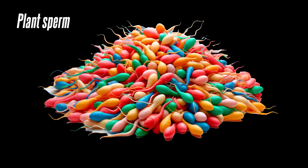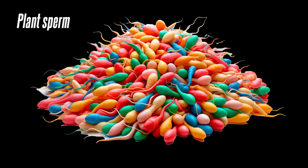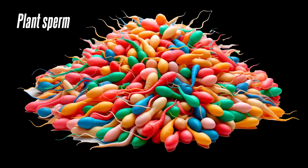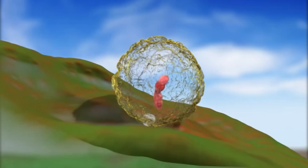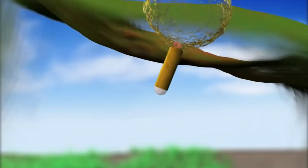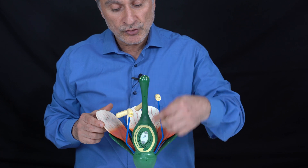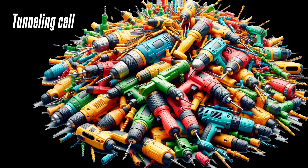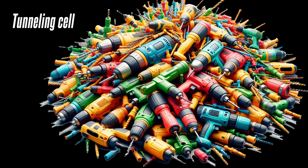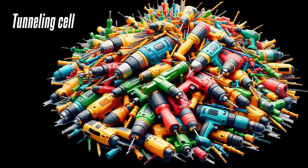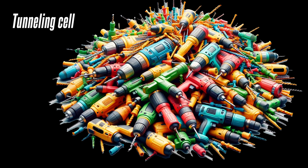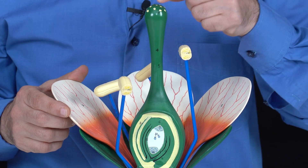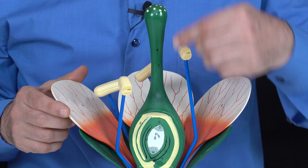The first cell type becomes plant sperm for the fruit that will be formed. The second is much more interesting — it turns into a tunneling cell. Like a drill, each tunneling cell opens a path for the sperm to descend down to the ovary. After this, the journey toward the ovary — that is, the egg — begins.